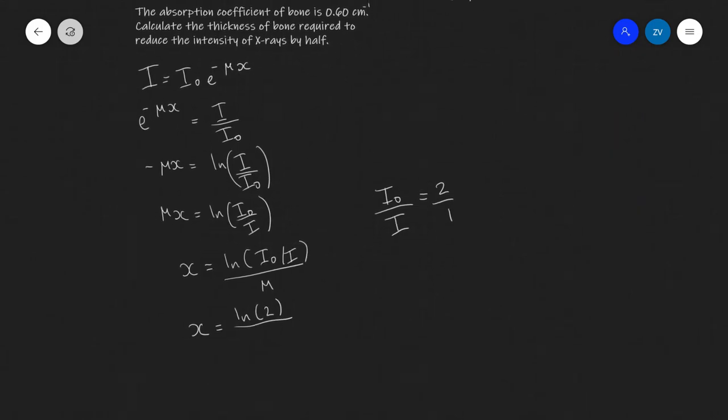Now if I put in 0.6 here I'm going to get my result in centimeters and there's no unit that's required in particular for this question so I'm going to give my thickness in centimeters. So putting this into a scientific calculator, the natural log of 2 divided by 0.6, we are going to get 1.15 centimeters as our final answer.